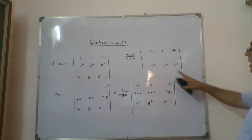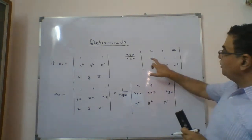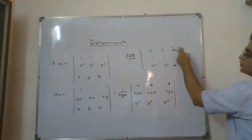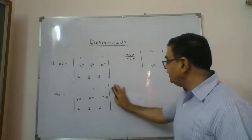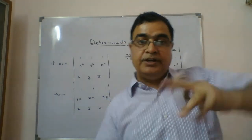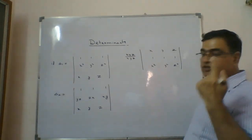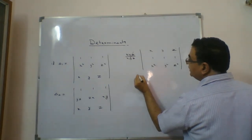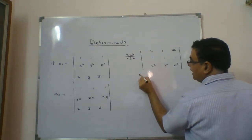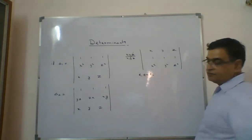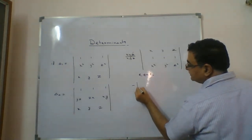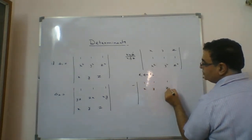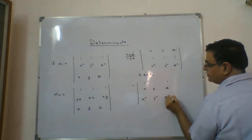Now you want the 1, 1, 1 row to come to the first place. So we interchange these two rows. Whenever two rows are interchanged, a minus sign is introduced in front. So here, R1 and R2 are interchanged, giving minus, and the result is: 1, 1, 1 then xyz, x², y², z².